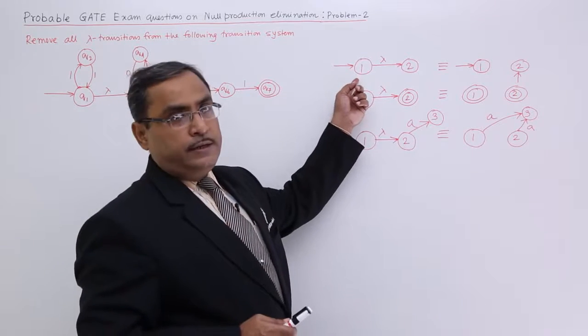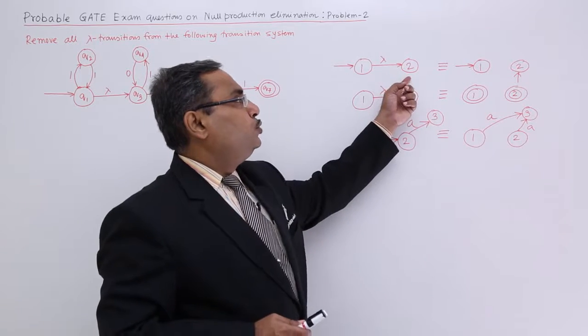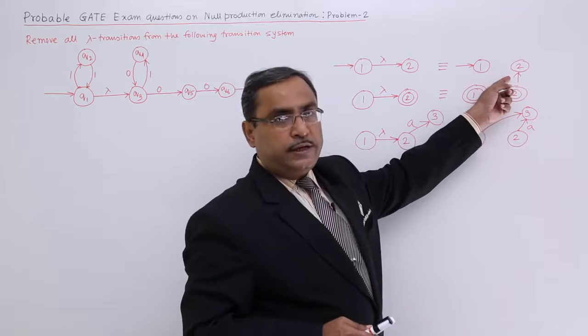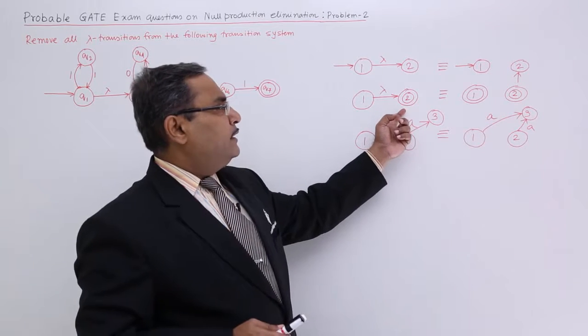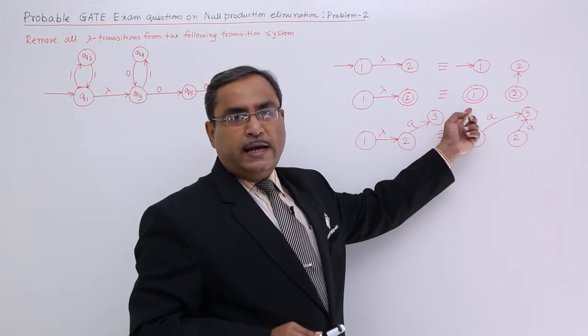If 1 is the initial state and there is a lambda transition from 1 to 2, then if we remove this lambda transition, 2 should be made as initial state. If 2 is the final state and there is a lambda transition, after removal 1 will be made as a final state.